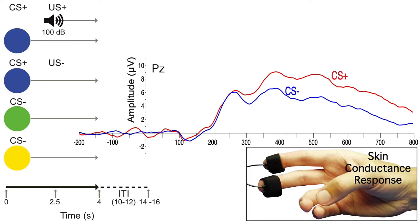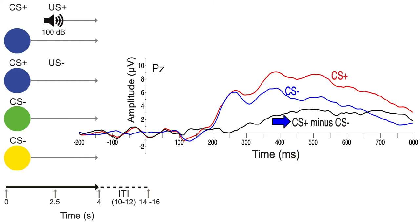Felix also found a larger skin conductance response for the CS plus, but the response of the skin was delayed for several seconds. The LPP result shows the actual time course of the brain's emotional arousal response to the CS plus. Felix also made a difference wave to show the time course of the brain's differential response to CS plus versus CS minus. This difference wave can't exceed zero until the brain has determined whether or not a given stimulus is associated with the noise burst. You can see that this occurs within 300 milliseconds of stimulus onset, even though the noise burst doesn't occur until 2.5 seconds later.